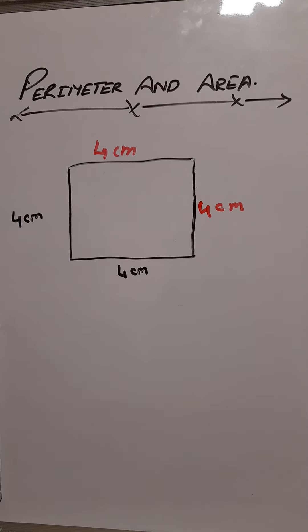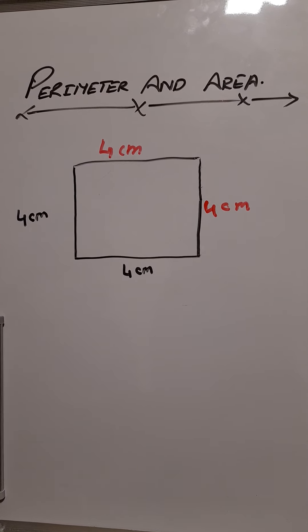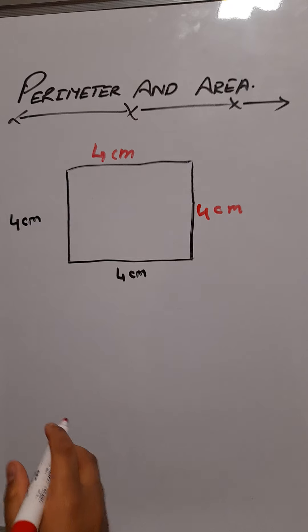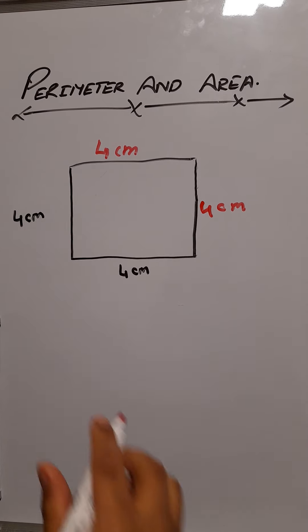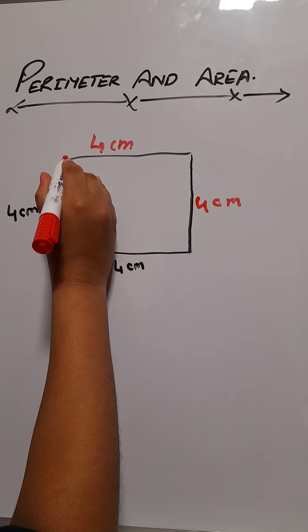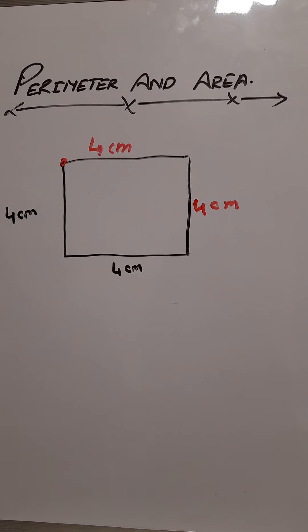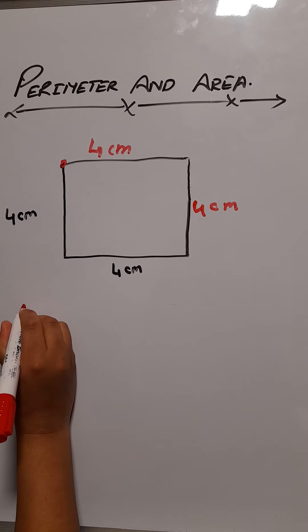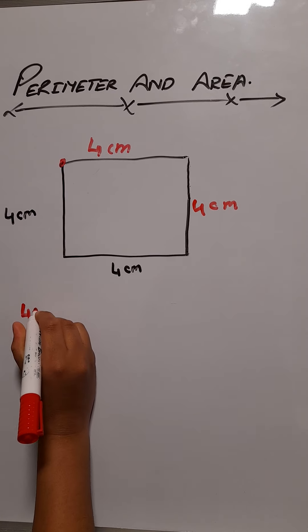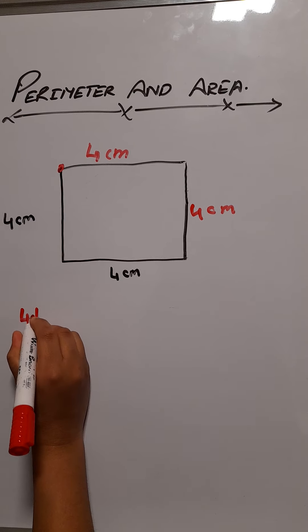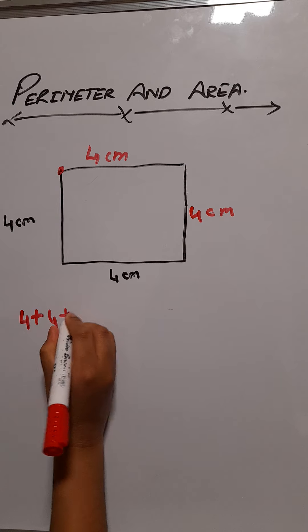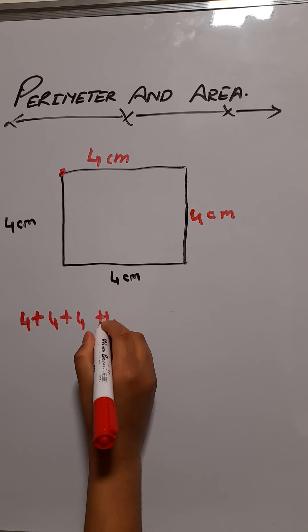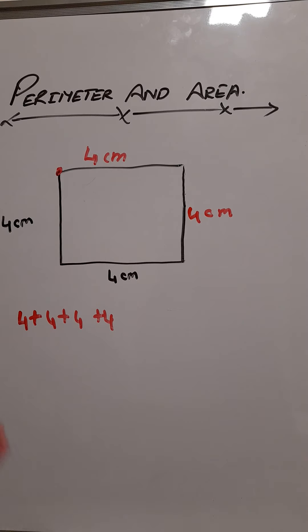Now we will jump onto the perimeter. The perimeter is when you add all of these sides up to get your answer. We'll just put a dot there so we know where we started and don't have to do it again. We'll start from this 4, so we will do 4 plus 4 plus 4 plus 4. Now we have to stop where we put our dot.